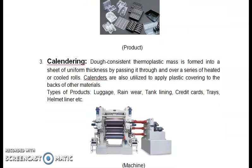Then calendaring operation: a consistent thermoplastic mass is formed into a sheet of uniform thickness by pressing it through and over a series of heated or cooled rolls. Calendars are also used to apply plastic covering to the back of other materials. Types of products are luggage, rain wear, tank lining, credit cards, trays, helmet liners, etc.